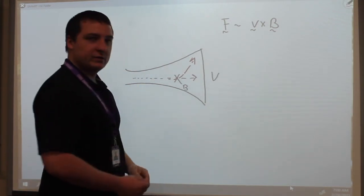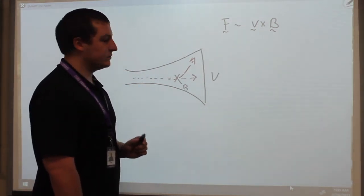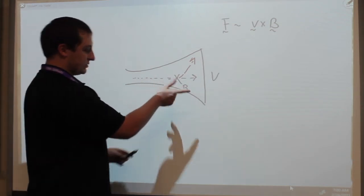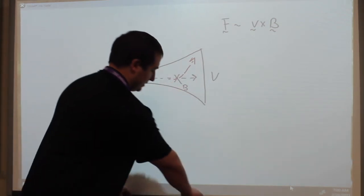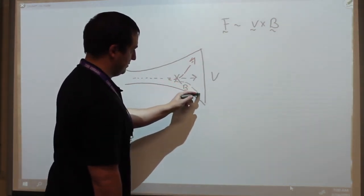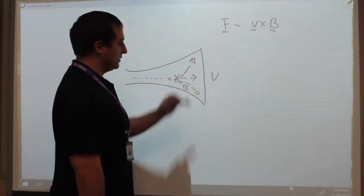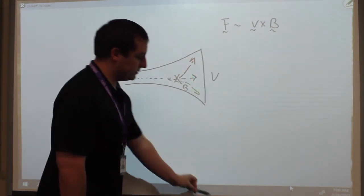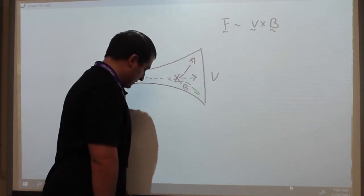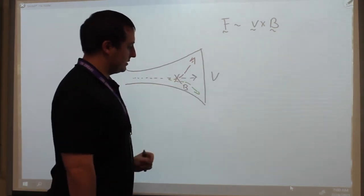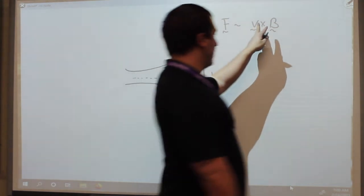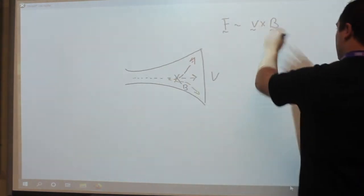But if you look closely at the video, what actually happens is the electrons get deflected down. So here's the expected result from that equation, and here is the actual. So what's happening? Did we get the order wrong?